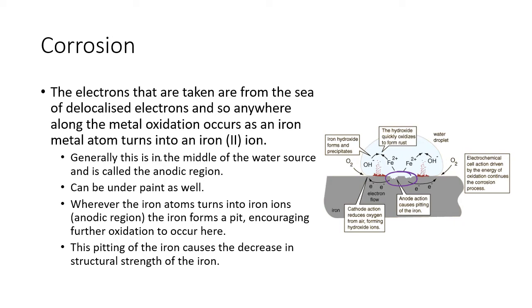Wherever this iron atom turns into iron ions, it forms a pit, and then it encourages further things. So first of all, it makes a small little divot, then it gets deeper, then it gets deeper, and then it gets very, very bad. This pitting of the iron causes the decrease in the structural strength. So eventually at some point, it'll get so thin, it'll get so riddled with holes that it will break and it won't be able to hold up anymore.